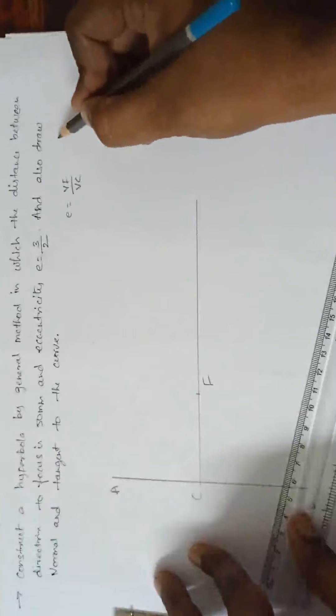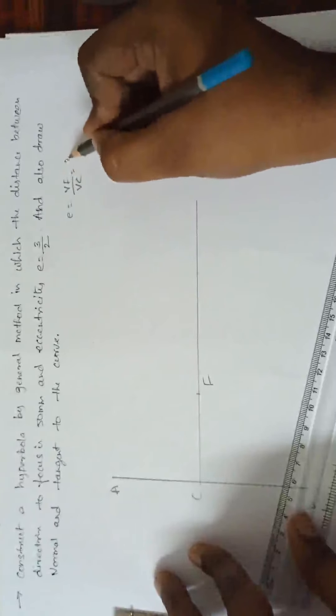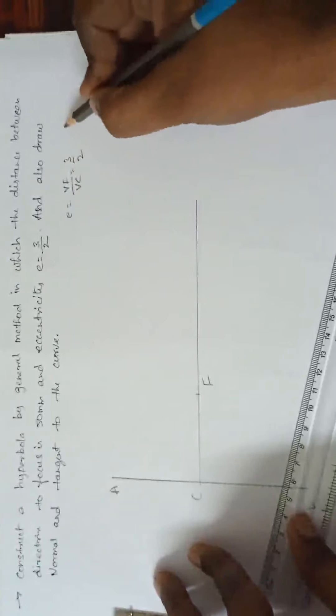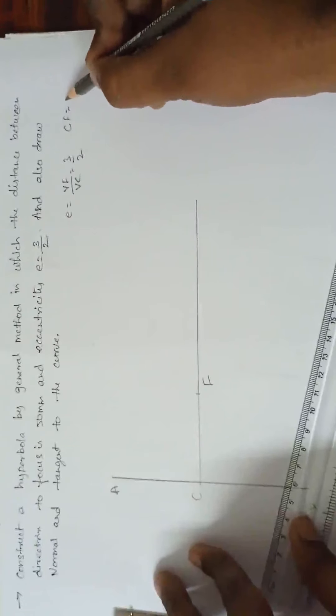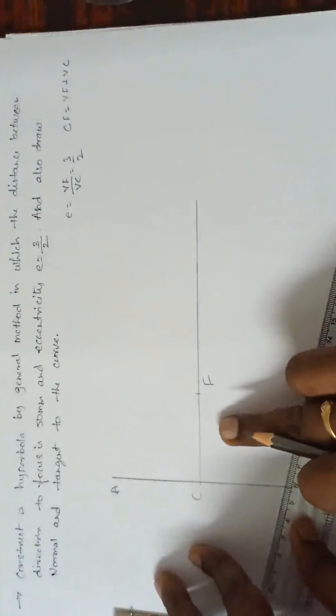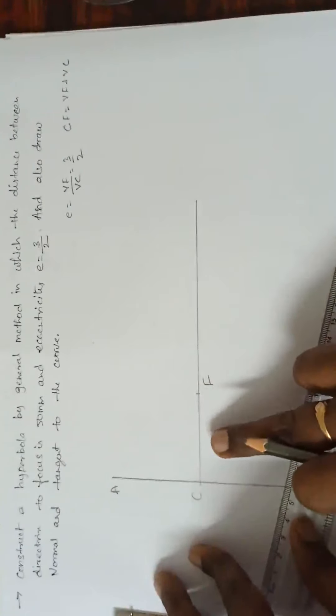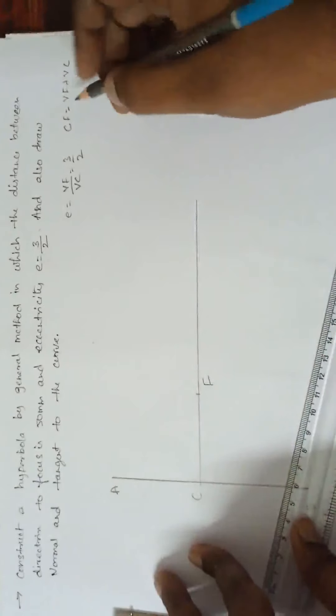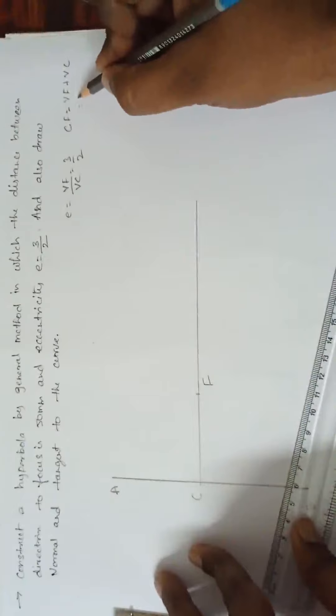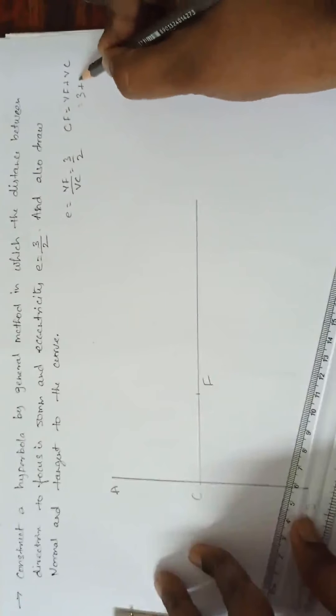It means he has given 3 by 2. We know that CF is equal to VF plus VC. If the V is somewhere in between C and F, we can write CF is equal to VF plus VC. Now, how much he has given? VF is equal to 3 plus VC is equal to 2.